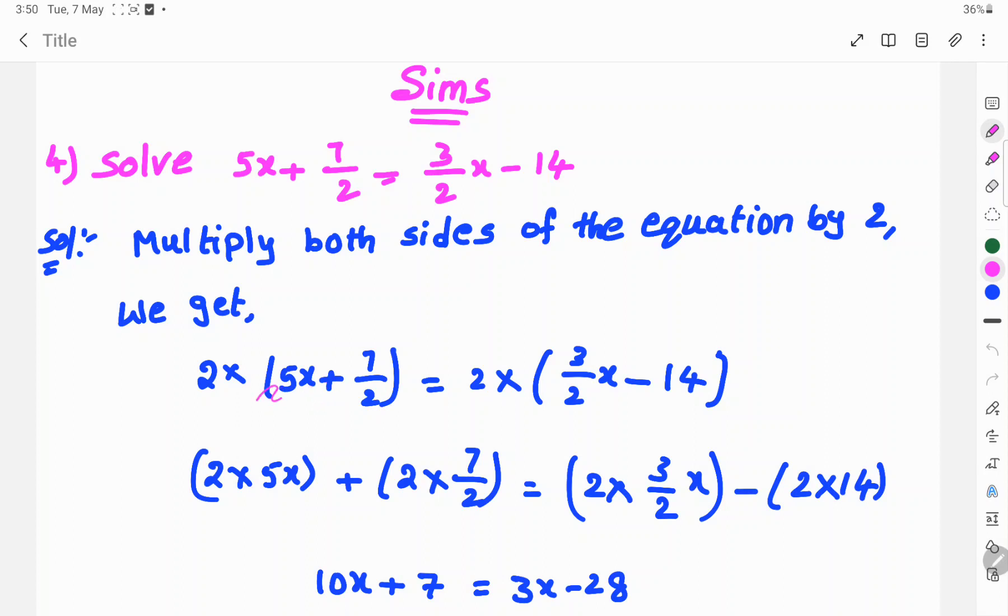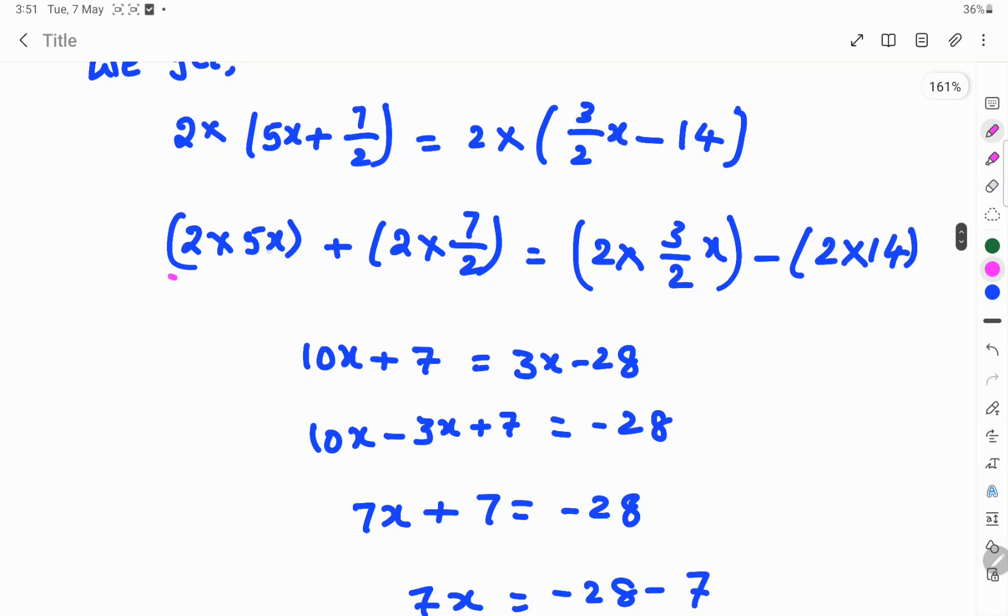So, 2 into 5x plus 2 into 7 by 2 equals 2 into 3 by 2x minus 2 into 14. Then, 2×5x is done.